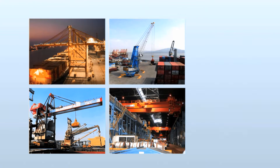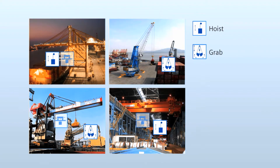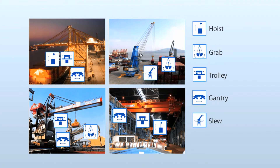The required sequences of moving are the same for all crane types and can be realized by six motions: Hoist for vertical movement of the load; Grab as a special case for vertical movement of the load with bulk material; Trolley for horizontal movement of the load; Gantry for horizontal movement of the complete crane; Slew for movement of the load around the vertical axis of the crane; and Boom hoist for movement of the boom.